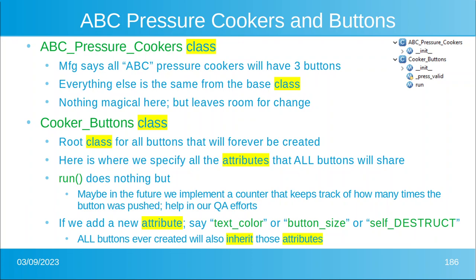Now let's look at the ABC pressure cooker and the buttons main class. The manufacturer told me that all of the pressure cookers that start with model ABC are going to have three buttons, but everything else is the same as the base class. There's nothing really magical about this class, but it leaves us room for change. Maybe the manufacturer says all the ABC ones are going to have a black color or something. The cooker buttons class is the root class for all buttons that will ever be created, and you can use them in things other than pressure cookers.